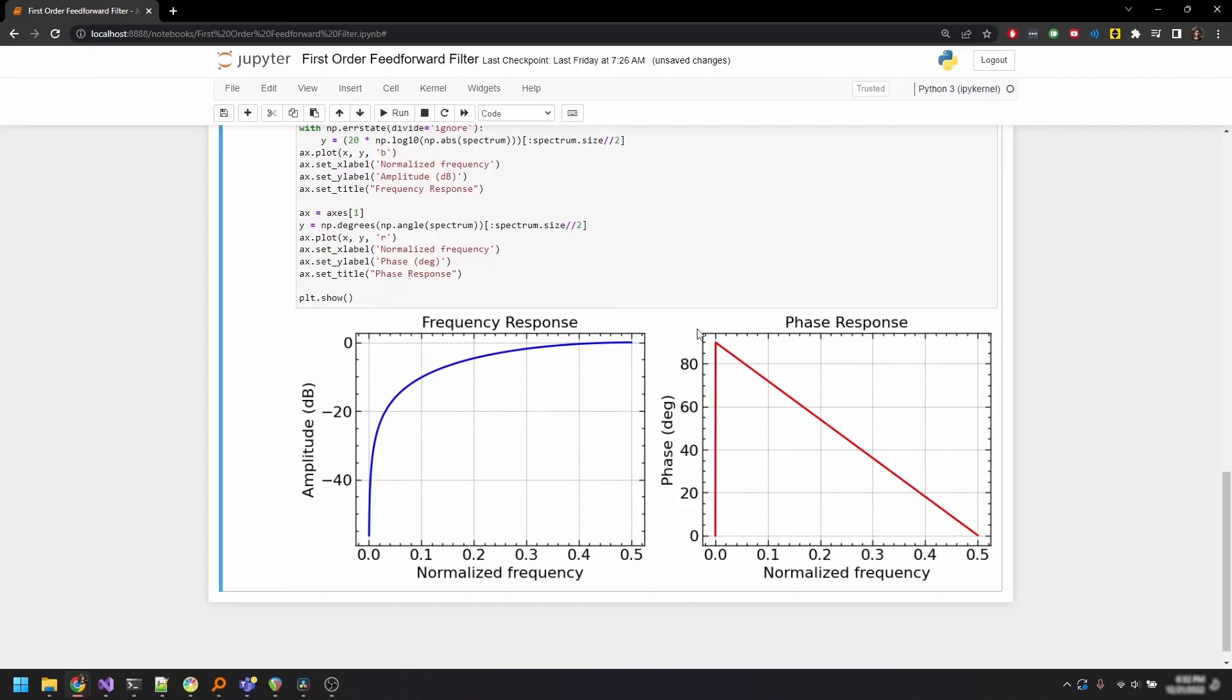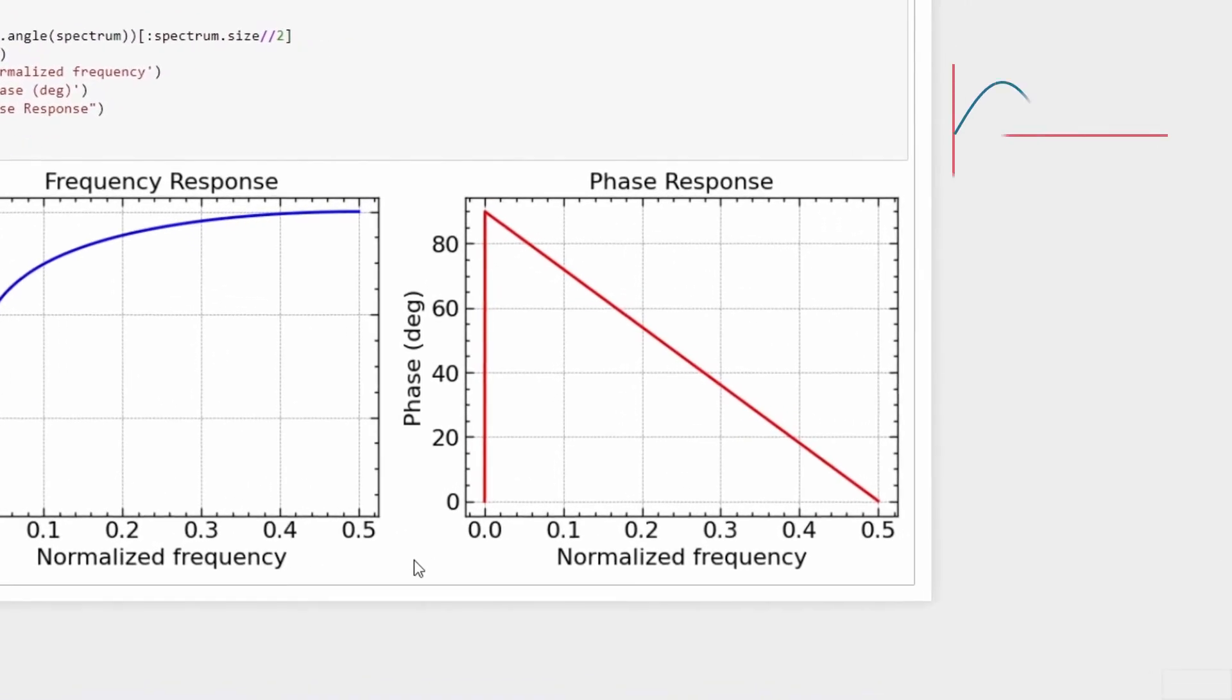You can kind of figure out what's happening here. With a negative sign introduced within one of the filter coefficients, the signals from the two paths are being subtracted rather than being added. Now if two signals are identical and are subtracted, they cancel each other out. Whereas if you introduce a phase shift in one of the signals, they don't cancel each other out.